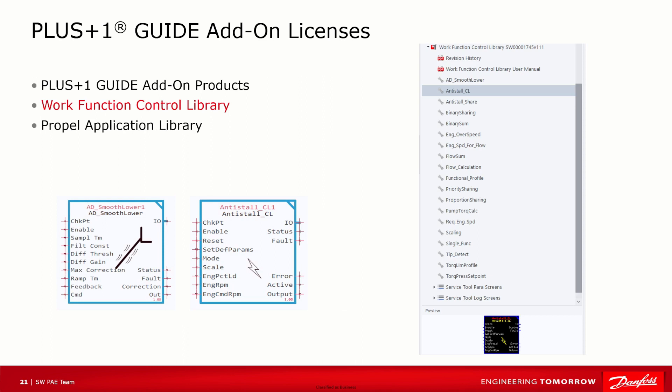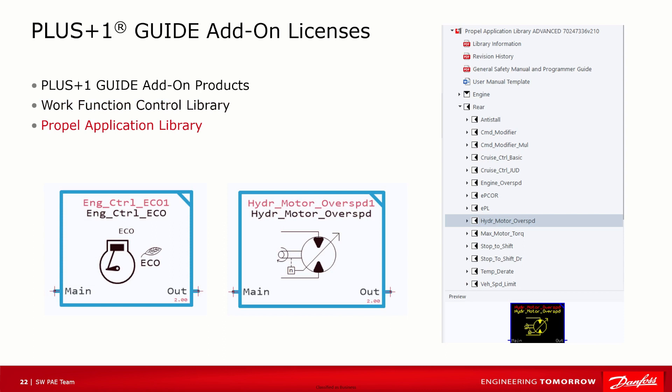Danfoss has also engineered advanced function block libraries to help meet more specific needs for machines. The Work Function Control Library contains blocks designed for functionality such as flow sharing and electronic torque limiting. The Propel Application Library is specifically designed to accelerate the development process for hydraulic propel systems within load-dependent and load-independent systems.